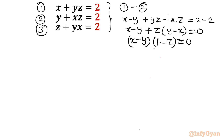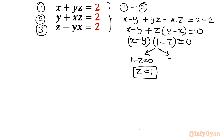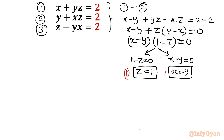From this equation we conclude two strong points: first, 1 minus z equal to 0, which means z equal to 1. Second, x minus y equal to 0, which gives x equal to y. I will solve both conditions one by one — condition 1: z equal to 1, and condition 2: x equal to y.